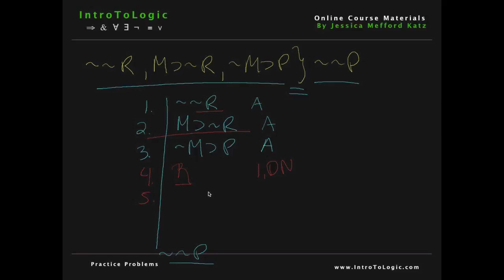Ideally we want as few lines as possible, but your argument is never wrong for having an extra line as long as you use the rules correctly, so don't worry about that. It looks like we can go back to using line 1 and line 2 and derive 'not m' with modus tollens. We'll write lines 1, 2 and MT. Notice that modus tollens says if we have a conditional and the negation of the consequent — which in this case would be 'not not r', right up here in line 1 — we can derive the negation of the antecedent. That's how we get 'not m' on line 5.